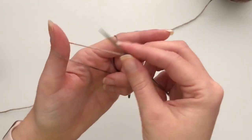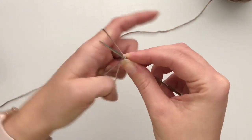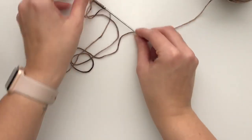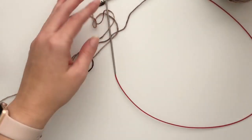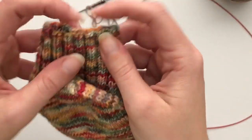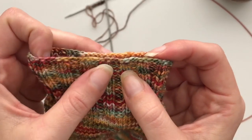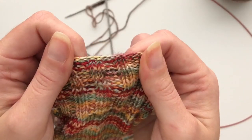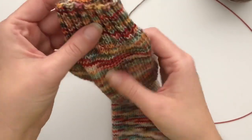So that is how you do the German twisted cast on. And I love the look of it. Let me pull it over and we'll look at it one more time. I love, I don't know, it leaves a little bit of bumps there, but I think it gives it a nice look to a cast on. So that's the German twisted cast on.